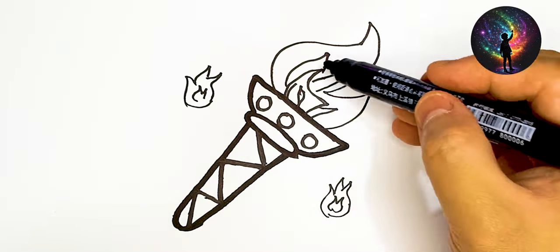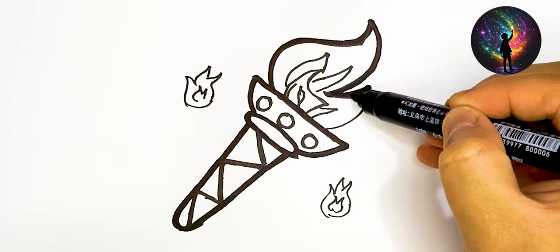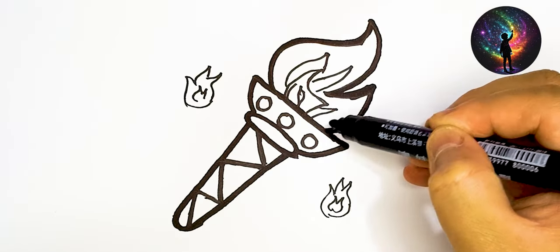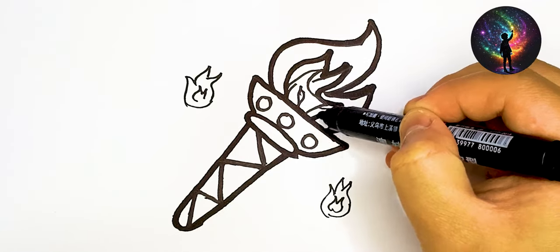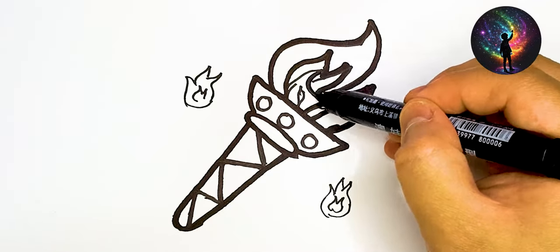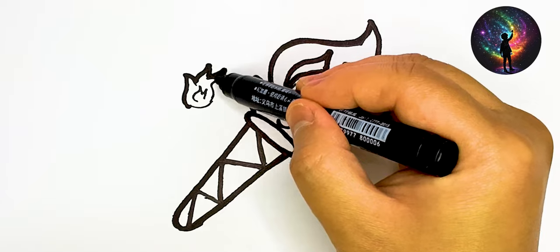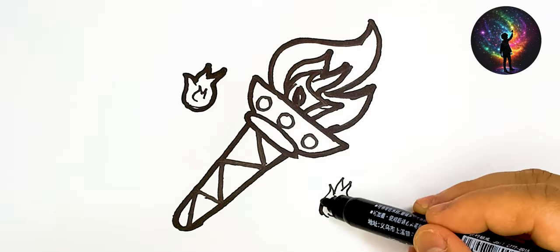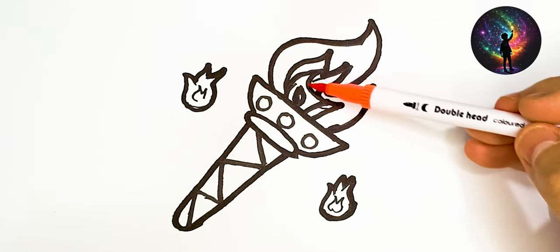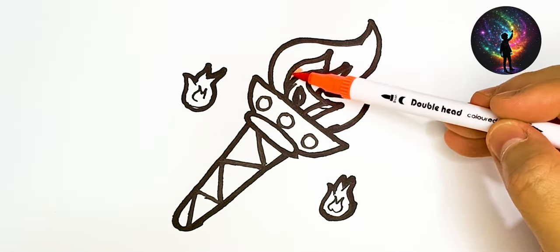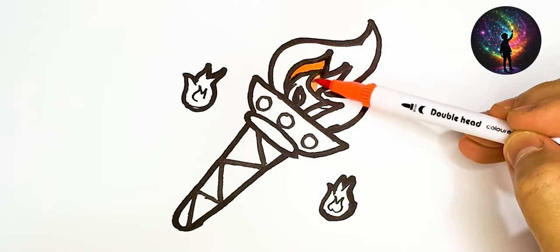A, B, C, D, E, F, G, H, I, J, K, L, M, N, O, P, Q, R, S, T, U, V, W, X, Y, Z. Now I know my ABCs. Next time won't you sing with me?